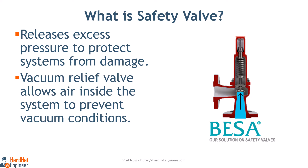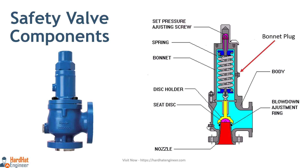What is a safety valve? Safety valves release excess pressure to protect systems from damage, making them crucial for maintaining safety in pressure vessels and other equipment. The primary purpose of a pressure relief valve is to protect life and property by venting fluid from an over-pressurized system. The vacuum relief valve ensures that a vacuum-like situation does not occur by allowing air inside the system. There are three types of pressure relief devices: reclosing type, non-reclosing type, and vacuum relief devices.